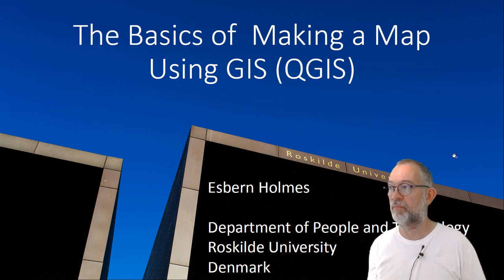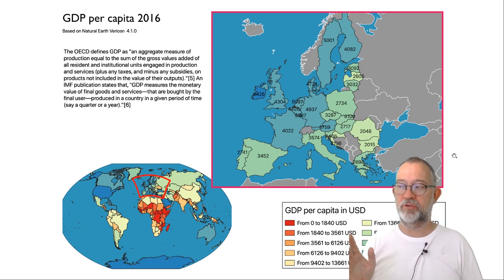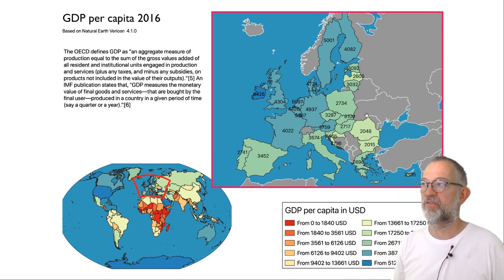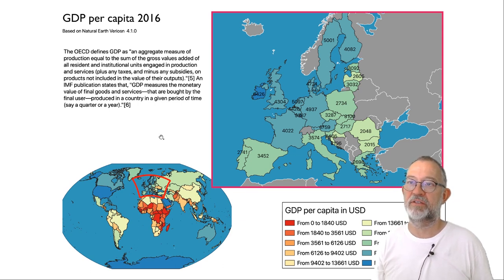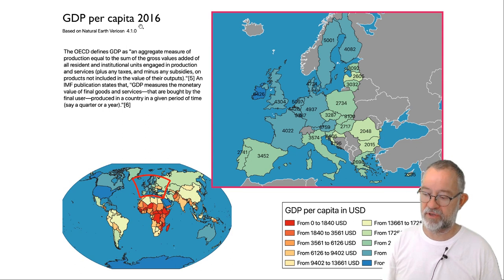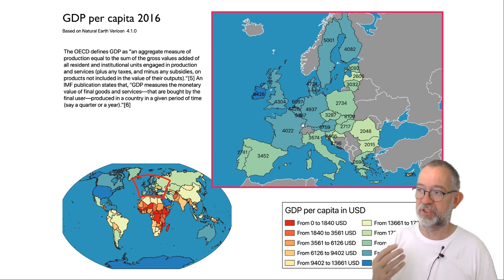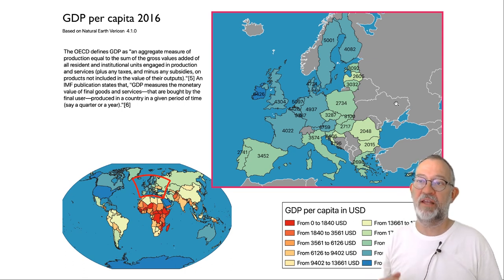So let's get started. What I would like to do is take you through the process of coming from nothing to being able to produce a map like this one. This is a relatively traditional map. It has two map frames — one of Europe and one of the world — at different scales and different projections, so different ways of making the round Earth flat. We have a legend with some modifications, some base text, and a title. The colors of the countries are given by the GDP per capita, a calculated value.